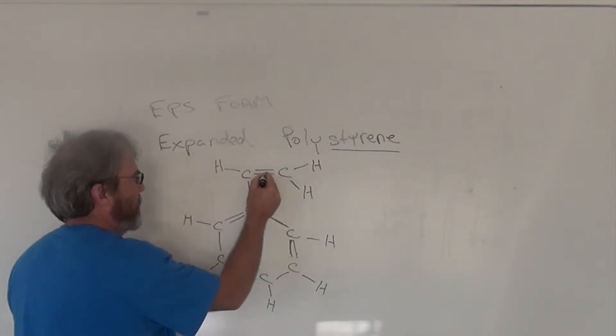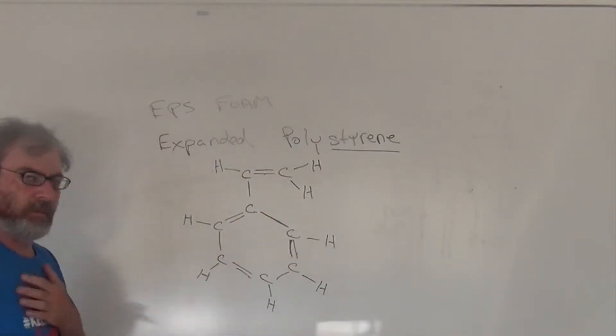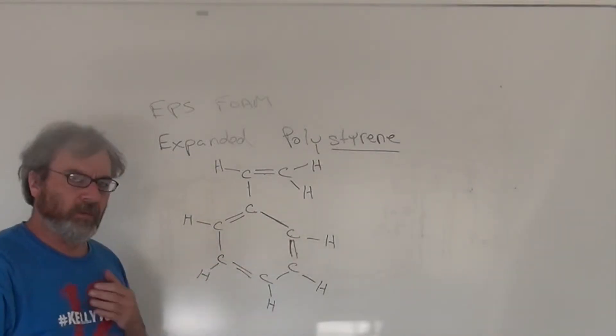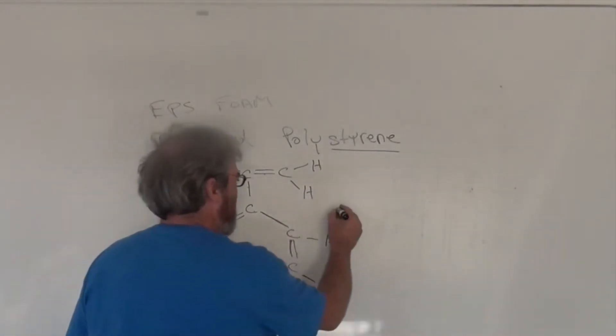So for example this carbon has one, two, three, four bonds. Every carbon atom has four bonds. Every hydrogen atom has one bond. So this is the molecule styrene.